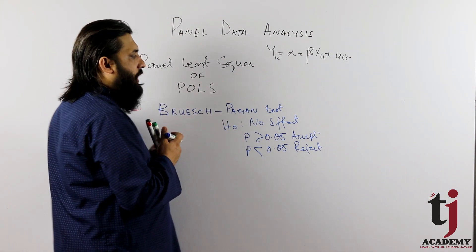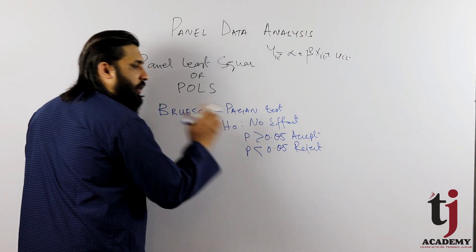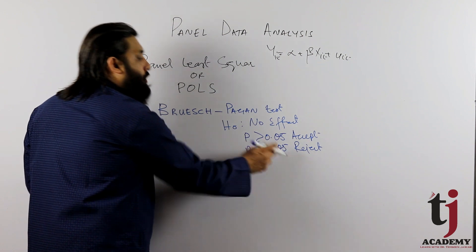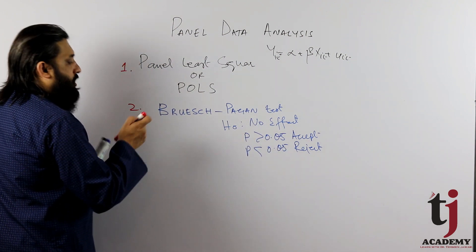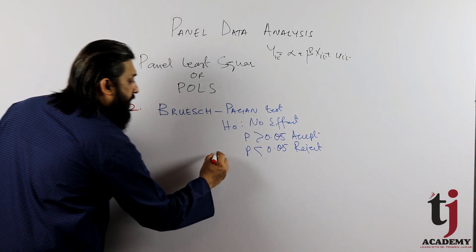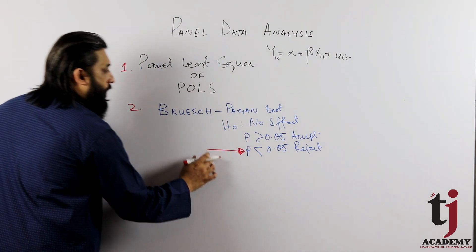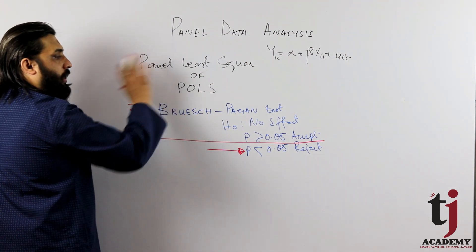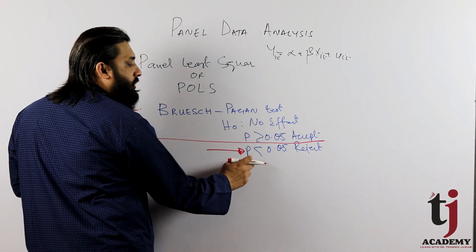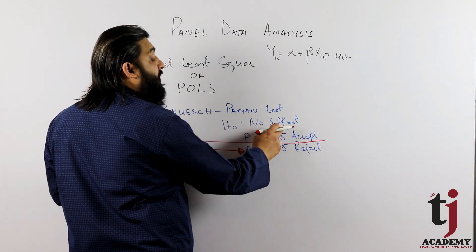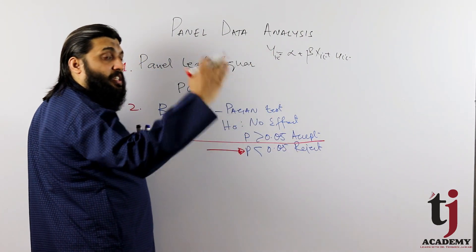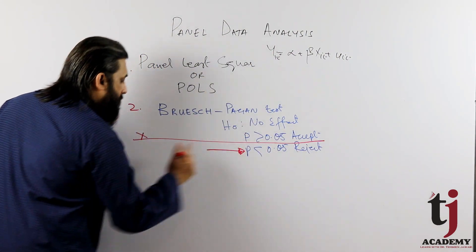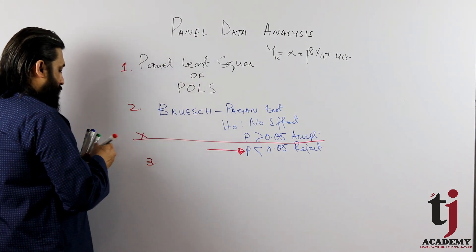intercept different value. So you can run POLS. But if this, then reject. Then, reject. If accept, then conclude this